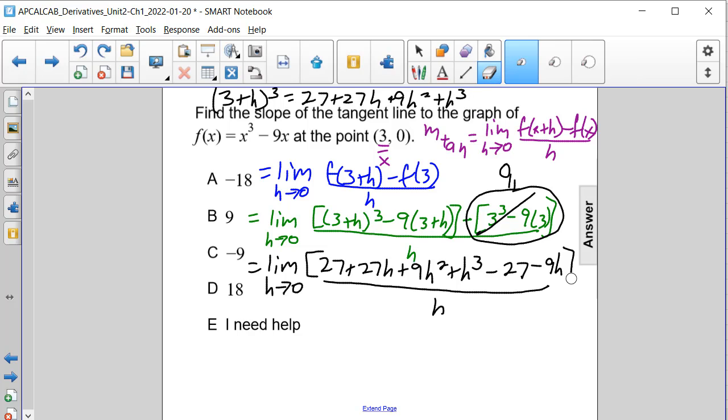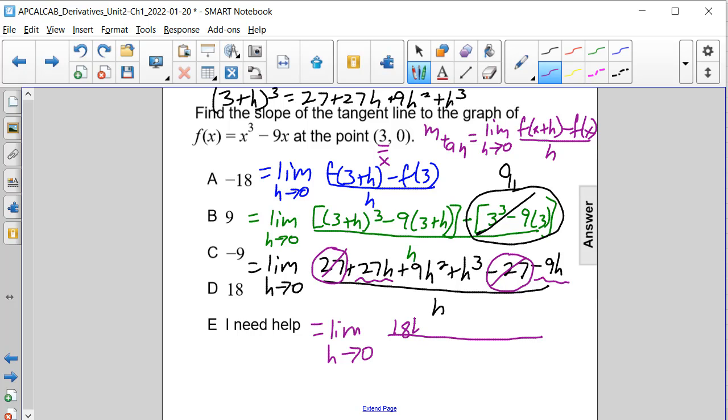So we can actually remove these brackets because we no longer have this extra set of brackets because the difference there is 0. So now let's work on simplifying this. Well, we know that 27 minus 27 is 0, so these cancel out. So we can rewrite this as the limit as h approaches 0, and then we have 27h minus 9h, so that's 18h plus 9h squared plus h to the third, all divided by h.